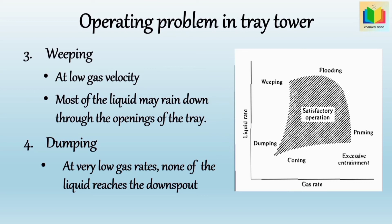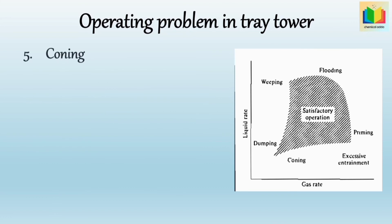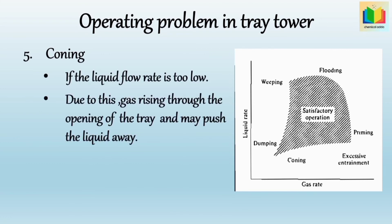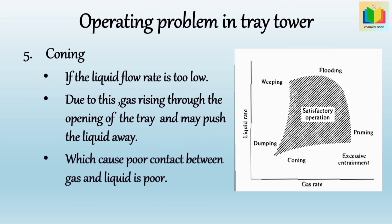The next operating problem is coning. This occurs when the liquid flow rate is too low. Due to this, gas rising through the openings of the tray may push the liquid away — this condition is called coning — which causes poorer contact between gas and liquid. All of these are operating problems in the tray tower, and any type of tray tower may face some of these difficulties. For better operation, the gas and liquid flow rates should be maintained. That's all about the tray tower and its operating problems.